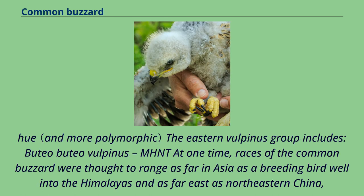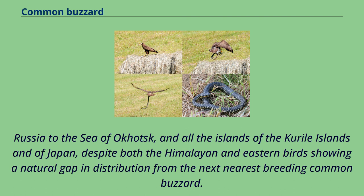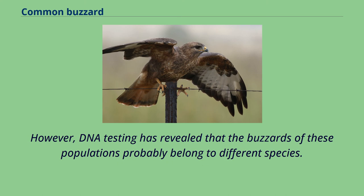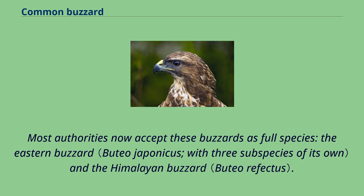The eastern vulpinus group includes Buteo buteo vulpinus. At one time, races of the common buzzard were thought to range as far in Asia as a breeding bird well into the Himalayas and as far east as northeastern China, Russia to the Sea of Okhotsk, and all the islands of the Kuril Islands and Japan. However, DNA testing has revealed that the buzzards of these populations probably belong to different species. Most authorities now accept these buzzards as full species — the eastern buzzard and the Himalayan buzzard.